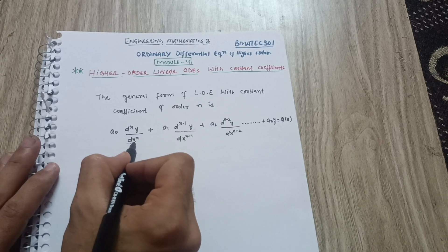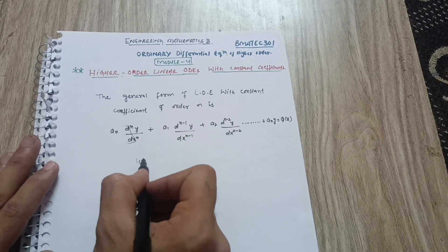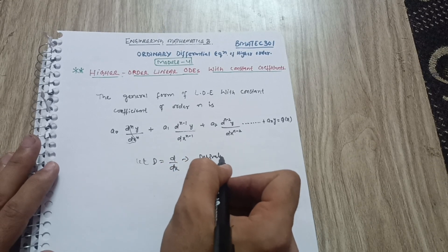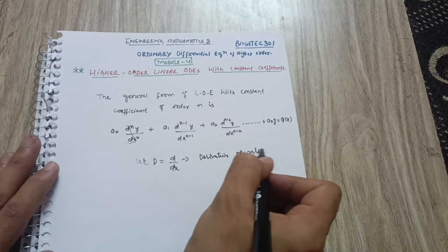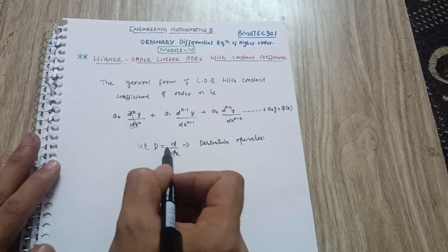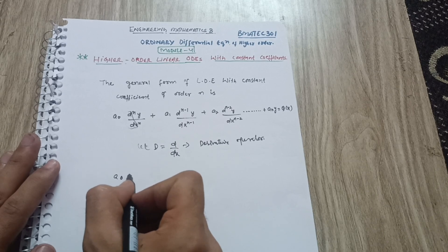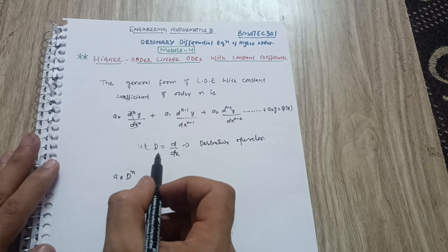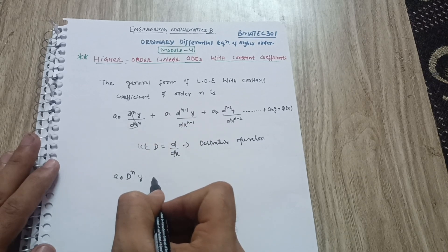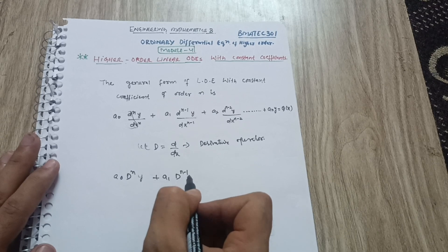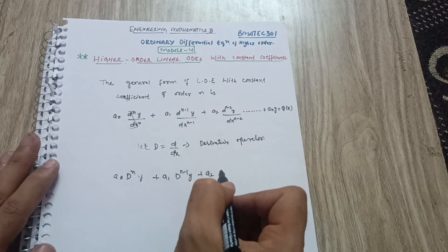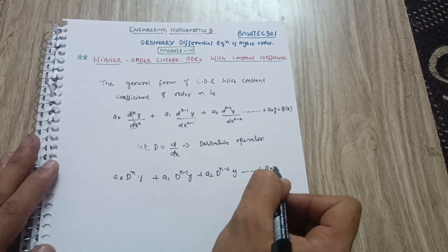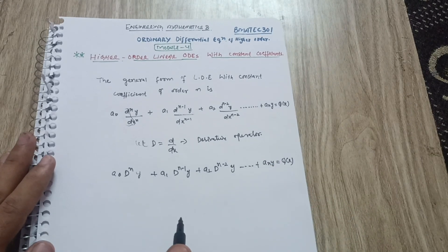Now, if I put D = d/dx — this is called the derivative operator — then instead of d/dx I can write capital D. So the equation becomes: a₀·Dⁿy + a₁·Dⁿ⁻¹y + a₂·Dⁿ⁻²y + ... + aₙ·y = Q(x). I hope you are getting this.